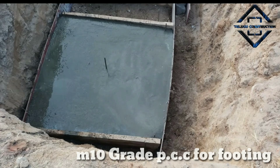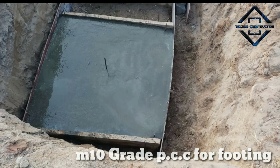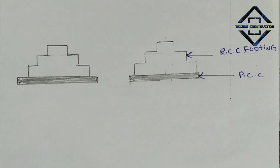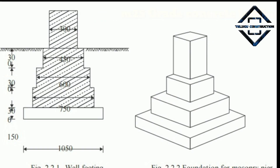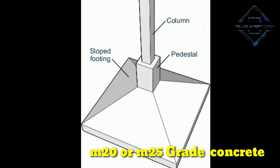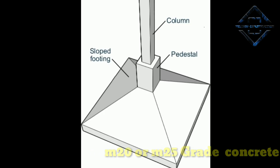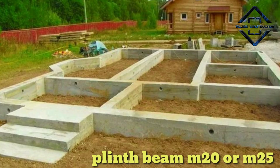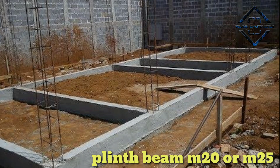First, the main cement concrete — I use M10. The footings, I use M25. The pedestals, I use M20 or M25. Next, the fifth beam, M20 or M25. According to drawing, M25 or M20.